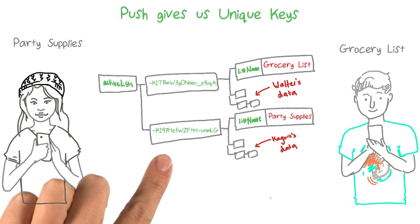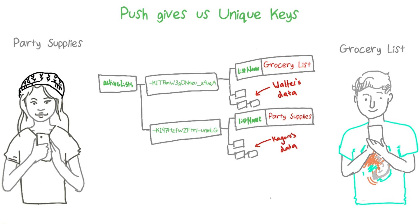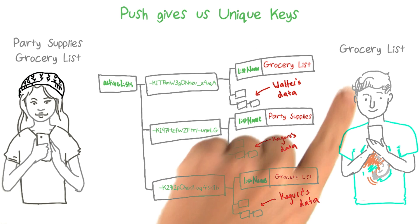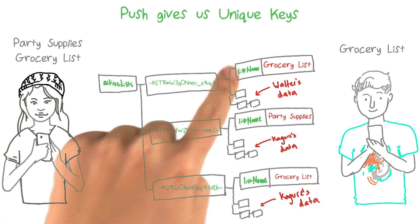Here are some examples of what push keys look like — they're sort of bizarre collections of numbers and letters. Via Firebase magic, this ordinary-looking string has the extraordinary attribute of being completely unique. So when Kugure wants to add her grocery list, push will generate a unique key for her, thus allowing both Walter and Kugure to have grocery lists.